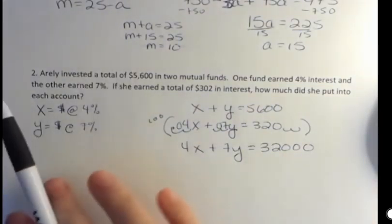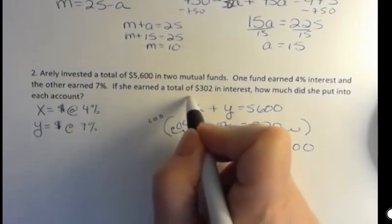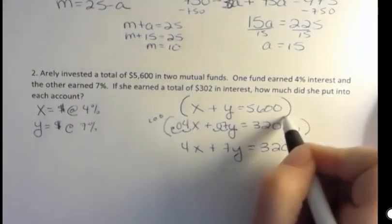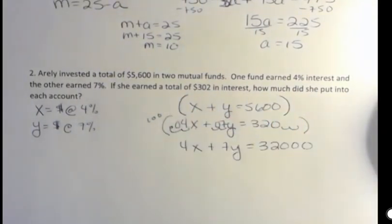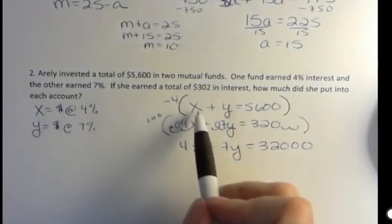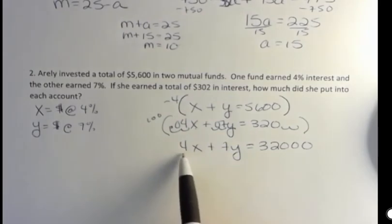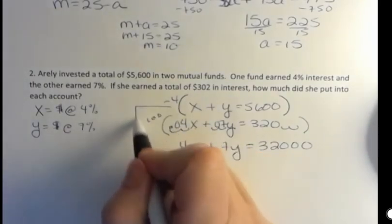Now instead of using a substitution like I did in the first one, I'm going to use elimination. I'm going to eliminate the X's. So I'm going to multiply this top equation by negative 4. Now the second equation I multiplied by 100 to get rid of the decimals. This one I'm multiplying by negative 4 so that I'll have the opposite of 4X. And then they'll cancel. So I can eliminate those.